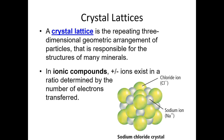Whenever a compound forms, we're often going to get a crystal lattice. A crystal lattice is the three-dimensional geometric arrangement of the particles. In ionic compounds, every negative ion is surrounded by positive ions and every positive ion is surrounded by negative ions. Ionic compounds and metals will both form crystal lattices, whereas covalent compounds will rarely form crystal lattices — they are typically molecules instead.